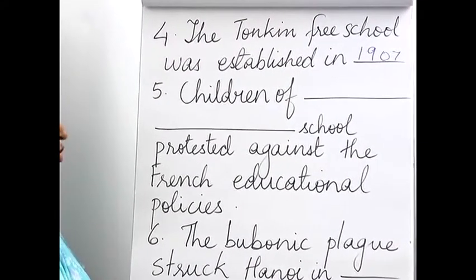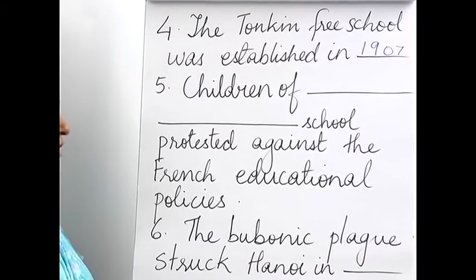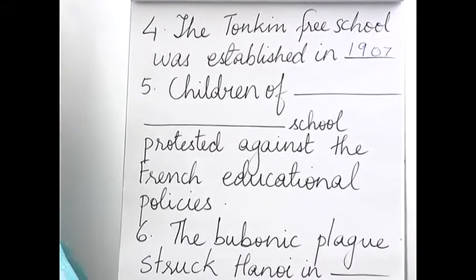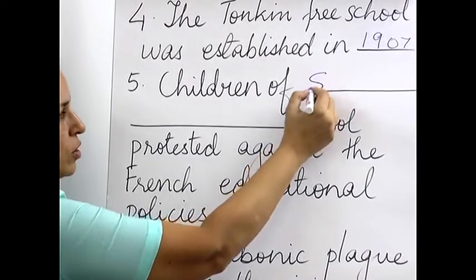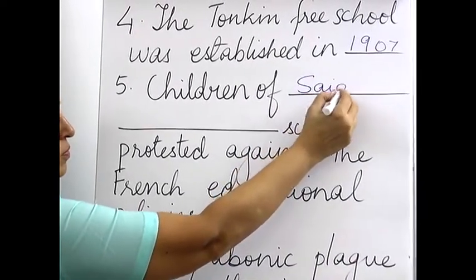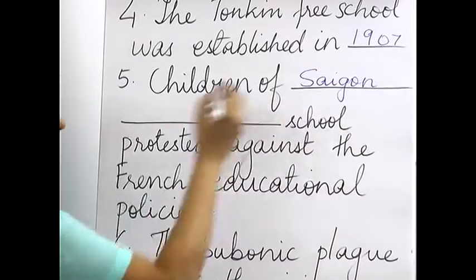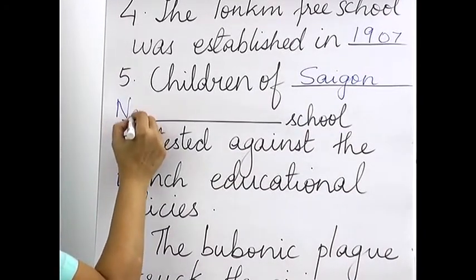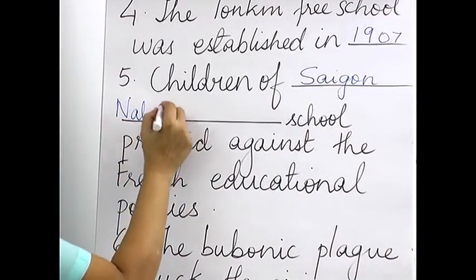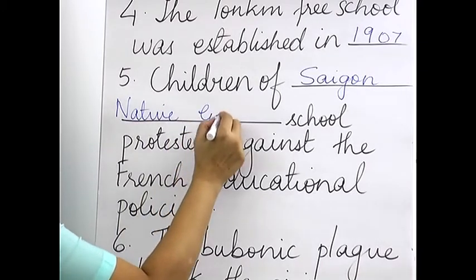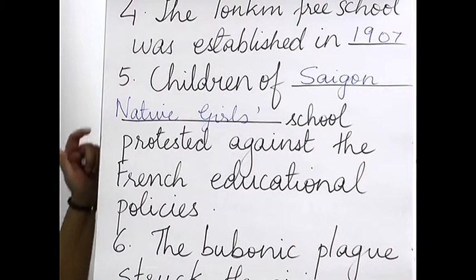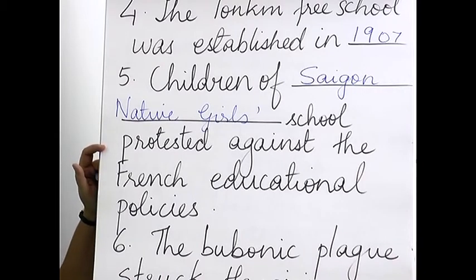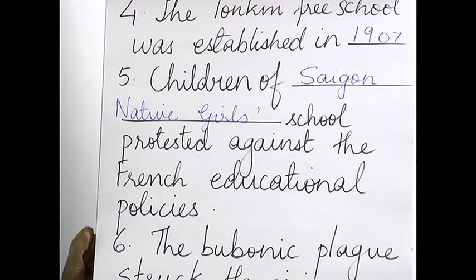Fifth: children of the Saigon Native Girls School protested against the French educational policies. So the Saigon Native Girls School protested against French educational policies.